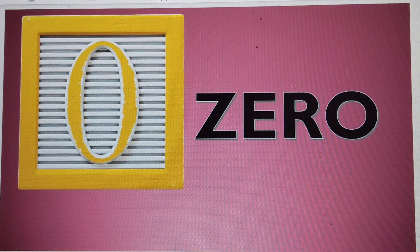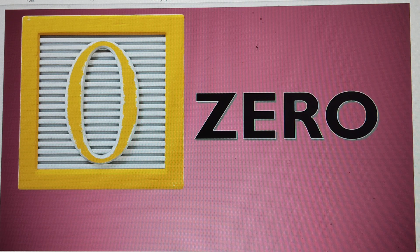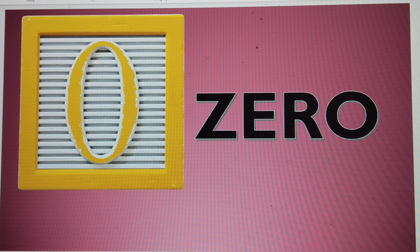The first number is 0. This is the smallest number. The name of this number is zero — Z-E-R-O.